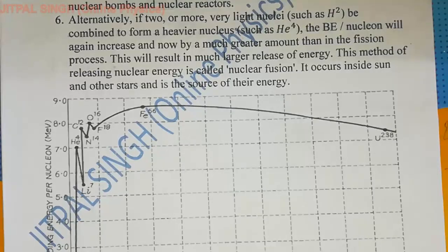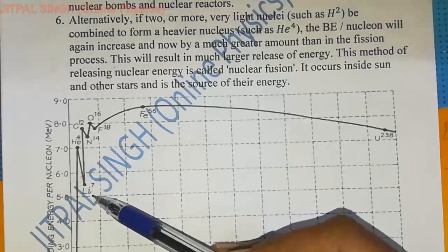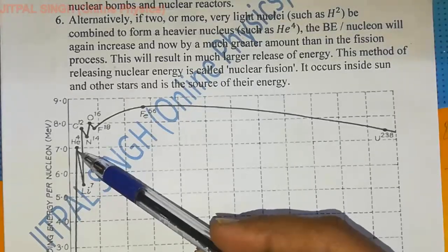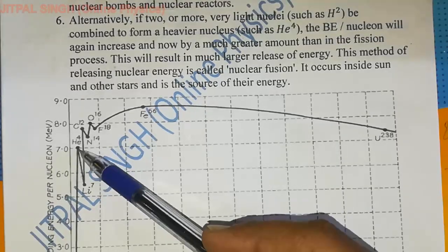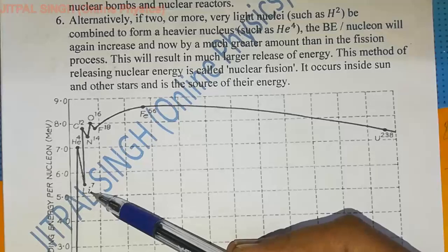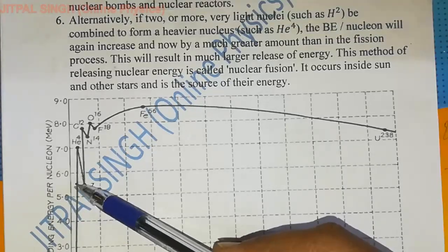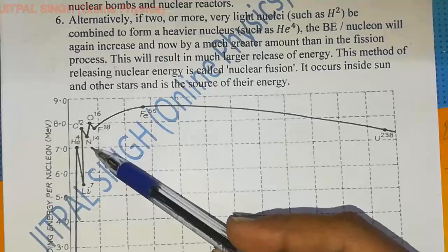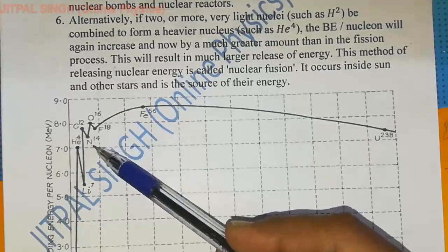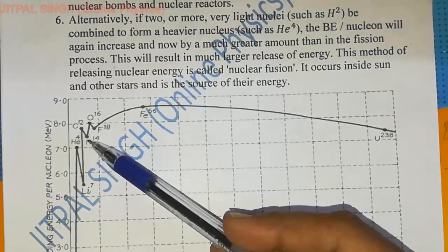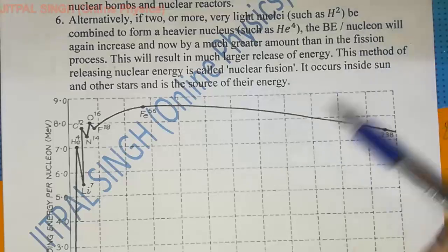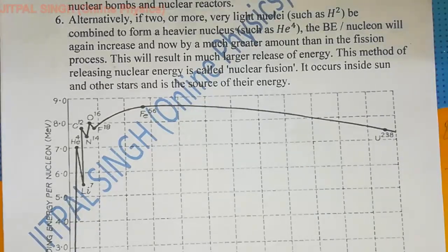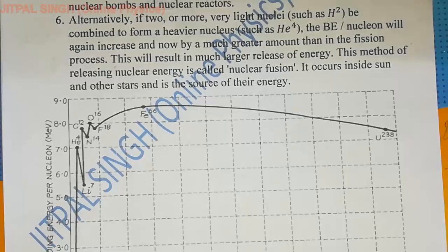For example, helium is more stable than lithium. The binding energy per nucleon of helium is about 7 MeV and that of lithium is about 5.6 MeV. Similarly, nitrogen and fluorine have a smaller value of binding energy per nucleon in comparison to oxygen. So even-even nuclei are more stable than their immediate neighbors.